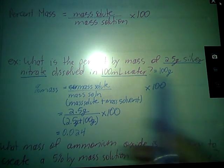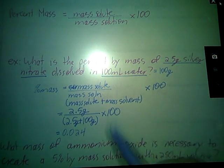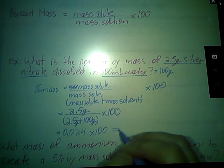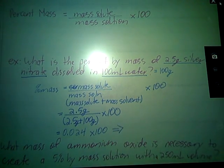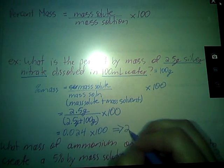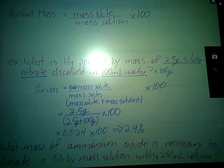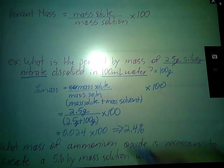How many sig figs can I have? I can have two, no more though. So we'll stop there. Times 100. I haven't done that yet. So this is a 2.4% solution of sodium nitrate by mass.